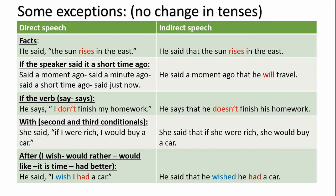With the second and third conditionals: 'She said, if I were rich, I would buy a car.' This is the second conditional — when we write it in indirect speech: 'She said that if she were rich, she would buy a car.' After 'I wish', 'would rather', 'would like', 'it's time', 'had better' — we never change the verb after them. So: 'He said, I wish I had a car' → 'He said that he wished he had a car.'